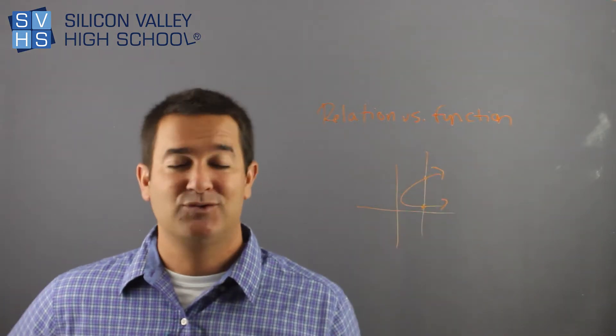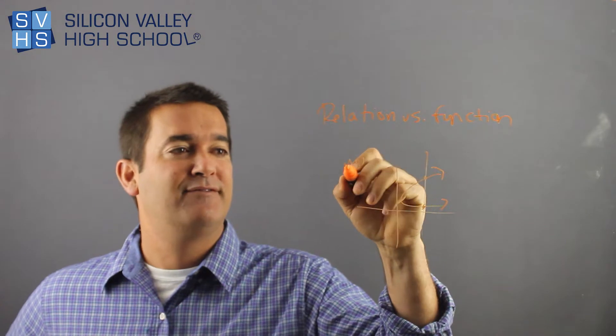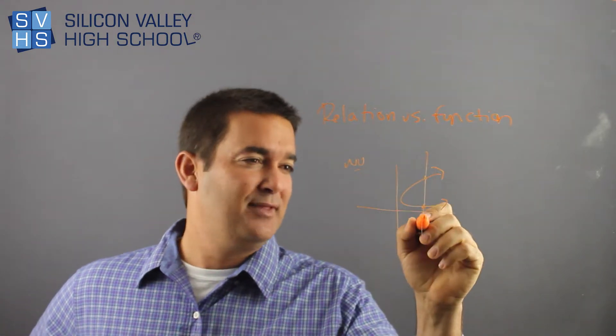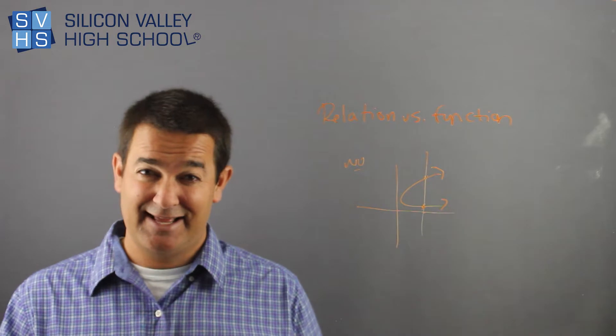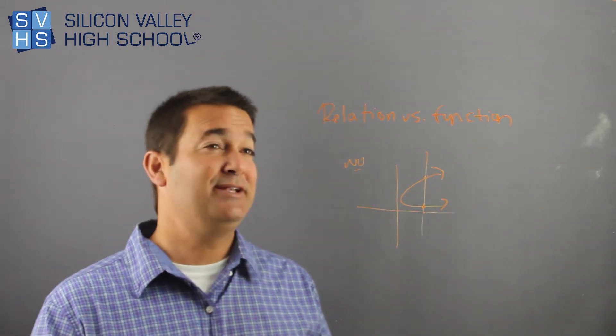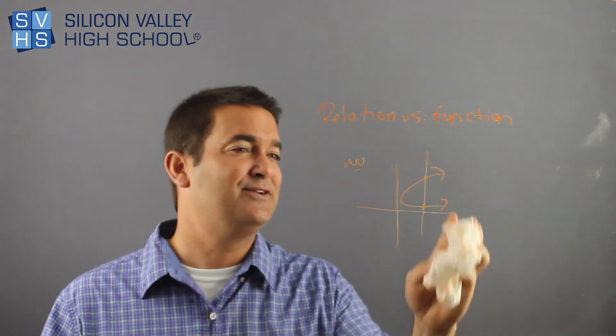This clearly crosses this graph twice, so no, not a function. And just for the record, that's because this x gave me 2 y's. That doesn't make sense. So that's the whole speech about this whole relation versus function.